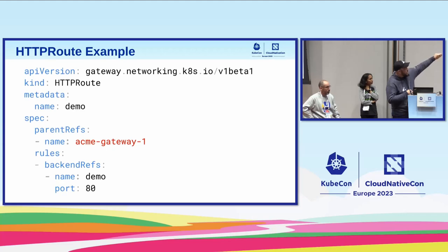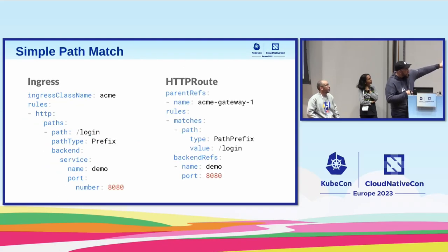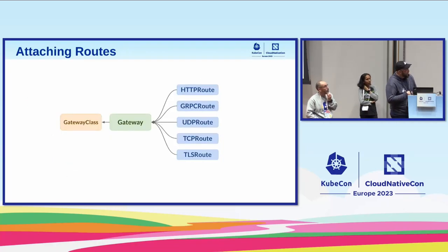HTTP route gives you the ability to attach to gateways via parent refs. You can have multiple parent refs, meaning a route can attach to multiple gateways. On the right is an HTTP route, and on the left is an ingress that does relatively the same thing — but the right side is way more extensible with a lot more fields available. All the different route types can attach to gateways, if a gateway supports them. Some gateways may only do UDP, for instance.